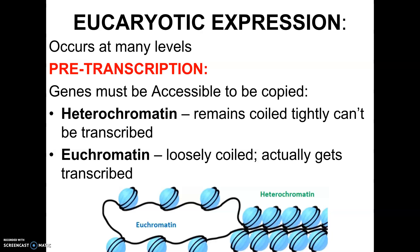But in eukaryotes, our DNA is a lot more complex, and our protein synthesis process is also a lot more complex. So we can control it on multiple levels. One of the levels, going through eukaryotic control, is the pre-transcriptional level, meaning we can prevent transcription from ever happening.